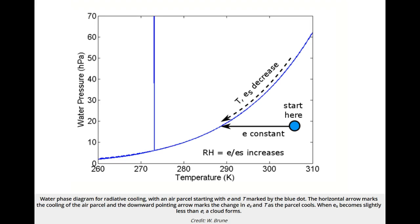Let's look at the three ways that supersaturation can be achieved: radiative cooling, mixing, and adiabatic ascent.